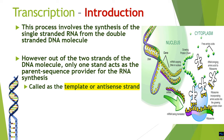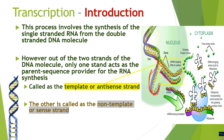Both strands of DNA cannot serve as the information source for RNA synthesis, so only one strand serves as the information coding system. This strand is called the antisense strand or the template strand. The template strand serves as the information coded by polymerases to synthesize RNA. The other strand, used only for stability, is called the non-template strand, also referred to as the sense strand, because the synthesized RNA has a sequence similar to it.